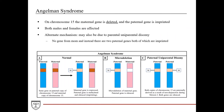First, Angelman syndrome — again, we're talking about chromosome 15. The way this generally develops is that the maternal gene is deleted and the paternal gene is imprinted. In normal cells, you have chromosome 15 from the paternal side and chromosome 15 from the maternal side. The paternal gene is normally methylated and silenced, and the maternal gene is expressed — which is sufficient for a normal phenotype. This process is called imprinting, specifically sex-specific imprinting, because you're silencing the paternal side and not the maternal side.